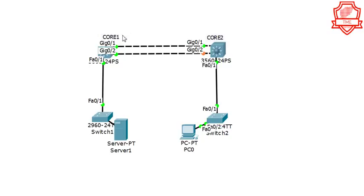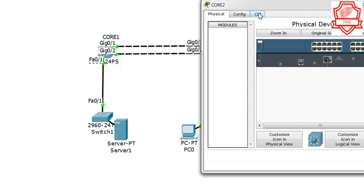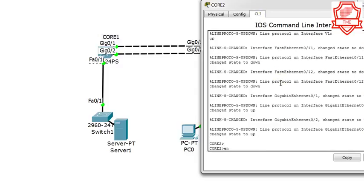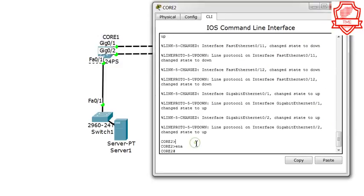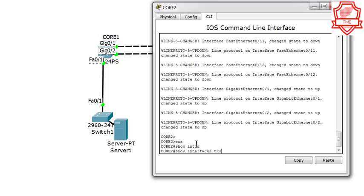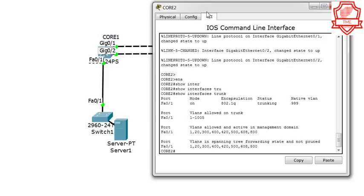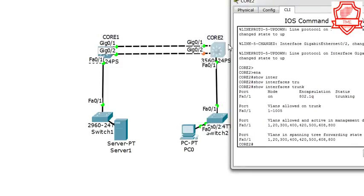Here we go. We have Core 1 and Core 2, and we're going to do a trunk between them. If you already know about trunking, that's fantastic. If not, trunking basically allows you to carry VLANs on the interfaces. I'm going to take a look at the trunk status. We're sitting on Core 2 and we only have a trunk to Switch 2, so we don't have any trunk on these gig ports to Core 1.